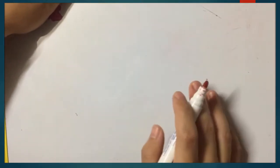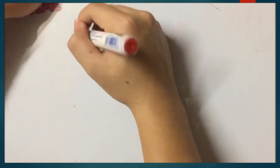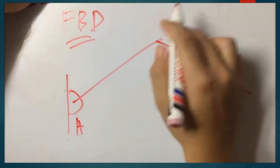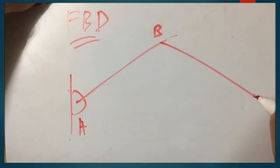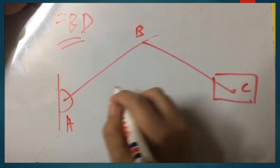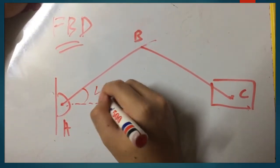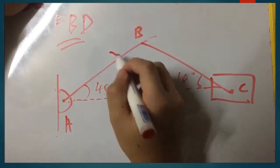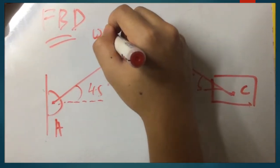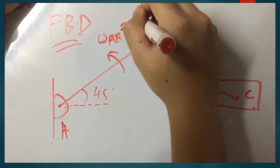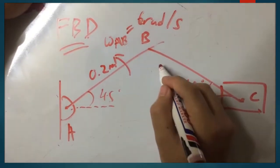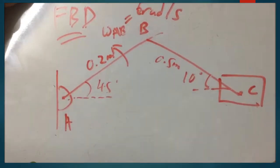Before we move on to the calculation, we need to draw the free body diagram, which is quite simple. First, we draw point A, then point B, and here is block C. We write down every piece of information given: 10 degrees, angular velocity of AB equal to 6 radians per second, and the lengths 0.2 and 0.5.